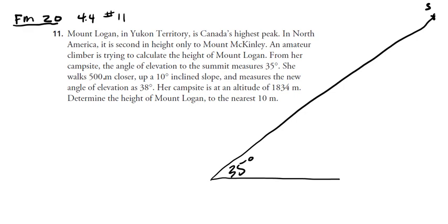She walks 500 meters closer up a 10-degree inclined slope. So if we say this is about 10 degrees, she walks 500 meters closer. She has a new angle of elevation to the summit of 38 degrees. Here is horizontal from her new position. This is 38.